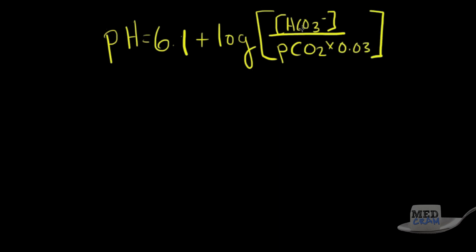There are two variables in this equation. One is bicarbonate, which primarily deals with metabolic processes, and the other is PCO2. If the bicarb changes, that's a metabolic process; if the PCO2 changes, that's a respiratory process. If bicarb goes down, that's a metabolic acidosis; if bicarb goes up, it's a metabolic alkalosis. If PCO2 goes down, that's a respiratory alkalosis; if PCO2 goes up, it's a respiratory acidosis.